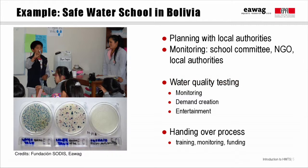A key part of the intervention is water quality testing. This serves to help monitor use of HWTS at the schools, as well as to create demand for safe water. The schools mostly use piped water, but the supply is intermittent and there is almost always some detectable E. coli in the water. Here you see a student from one of those safe water committees testing for residual chlorine, with a safe storage container there. And below, these are some of the E. coli testing plates that are used. Students and teachers alike enjoy the water quality testing, and it has proven very effective at convincing people that the treatment is important and works.